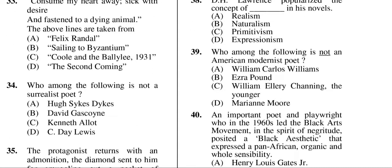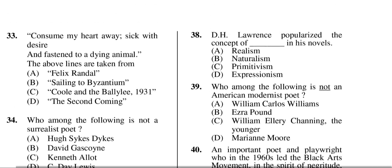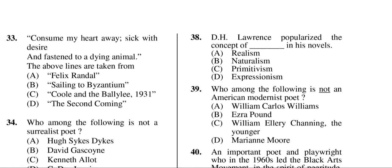Question thirty-nine: who among the following is not an American modernist poet? The answer is C — William Ellery Channing the Younger. Question thirty-eight: D.H. Lawrence popularized which concept in his novels? The correct answer is primitivism.